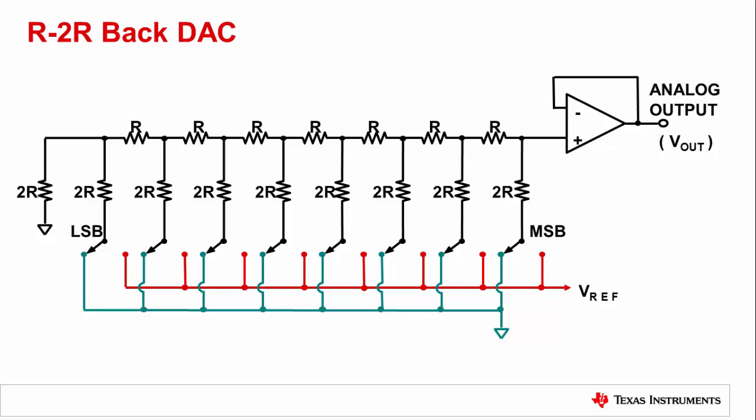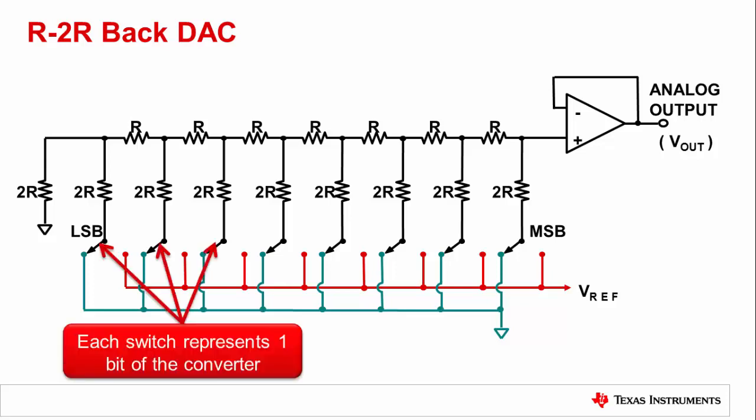An intuitive way to consider the R2R DAC is as a binary weighted voltage divider. The 2R leg in parallel with each R resistor in series creates this binary weight. As a result, we only need one switch for each bit of resolution. The switch is either connected to ground or to the reference voltage. In a moment, we will get into more detail on the binary weighting.